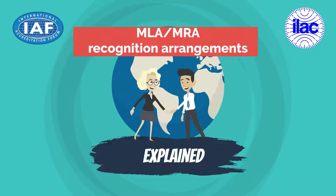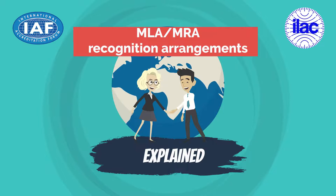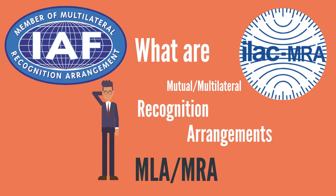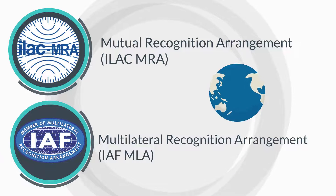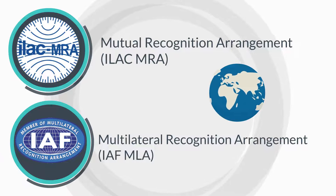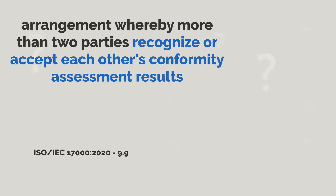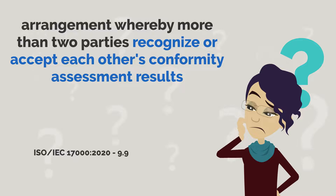Welcome to another episode of the Explanatory Video Series. What are Mutual, Multilateral Recognition Arrangements? IAF and ILAC Multilateral or Mutual Recognition Arrangements, or MLA MRAs, are agreements signed by more than two parties to recognize the equivalence of one another's conformity assessment results.